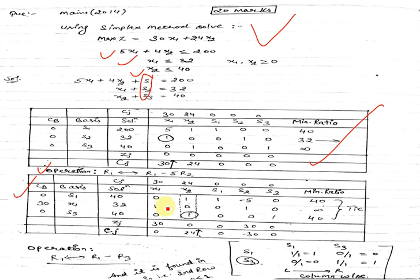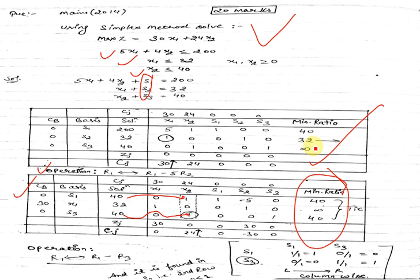When you make this table, you will see that 40 divided by 1 — this is the key column — and again 40 divided by 1 in the minimum ratio. You will see 40 and 40. We are required to select the minimum ratio, and in the first we are getting 32 as the minimum ratio. But in this case we are getting 40 and 40.